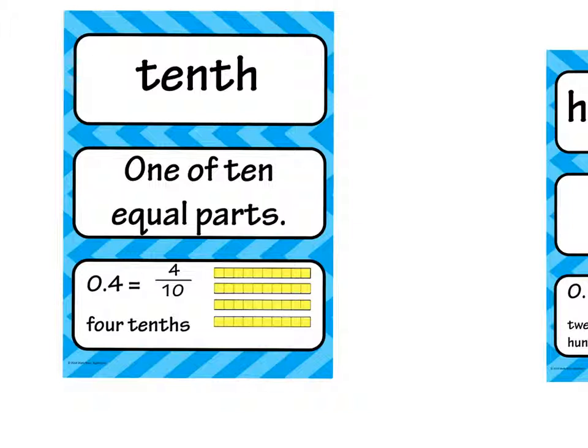The next vocabulary word is tenth, which is 1 of 10 equal parts. So 0 decimal 4, 4 tenths, is the same as 4 out of 10, or 4 over 10, or just 4 tenths.